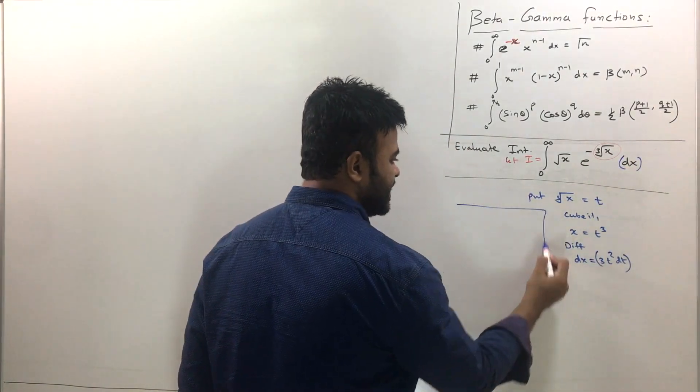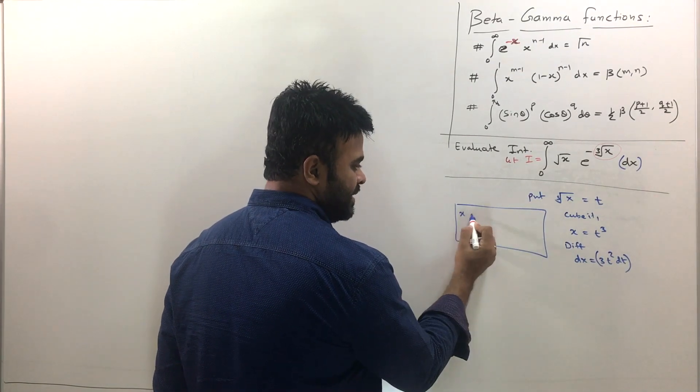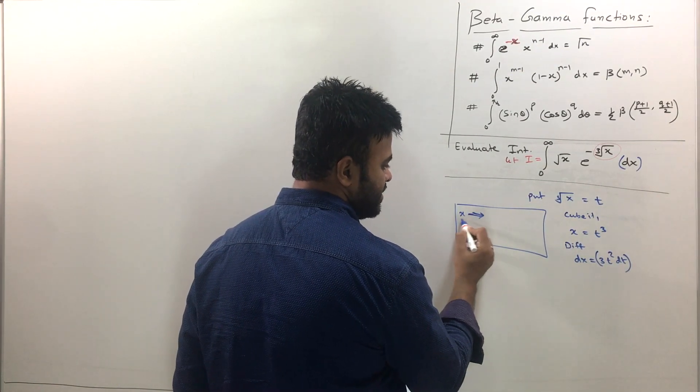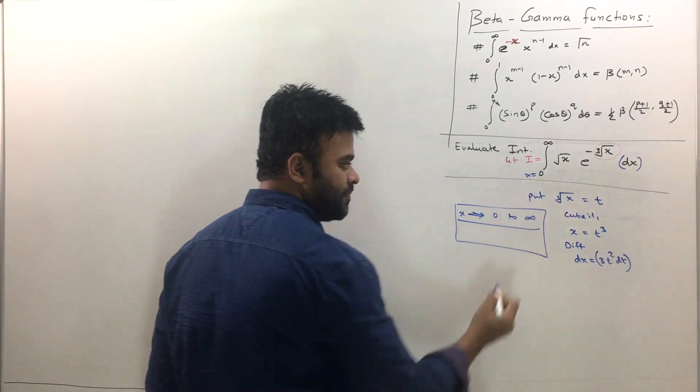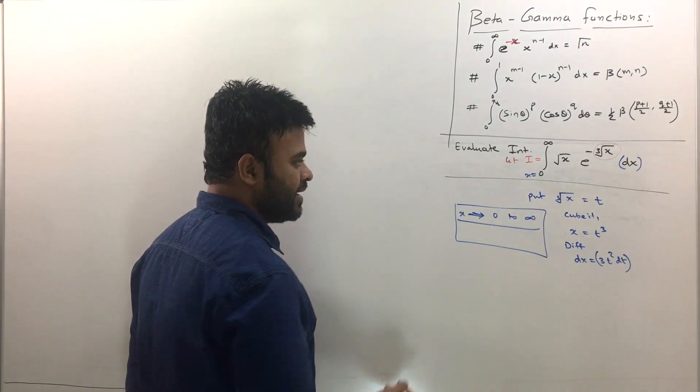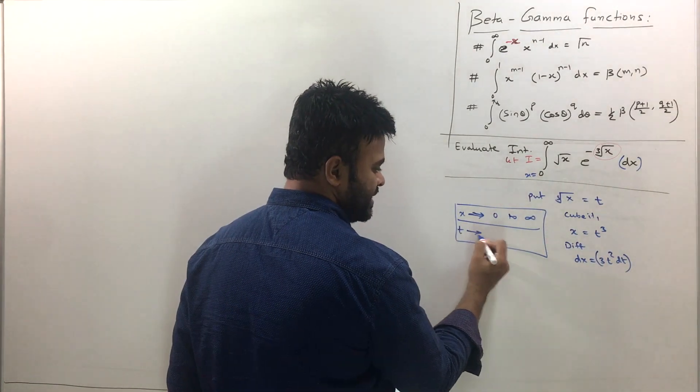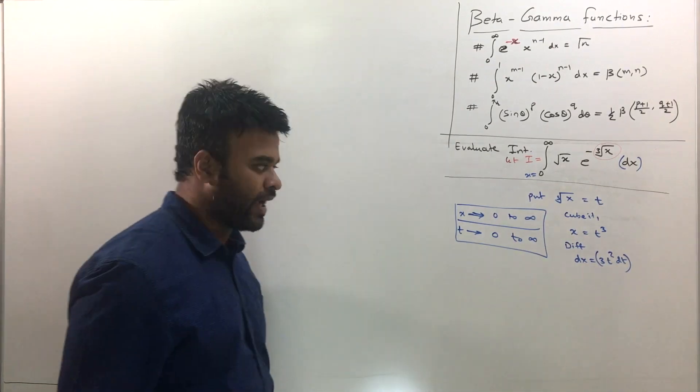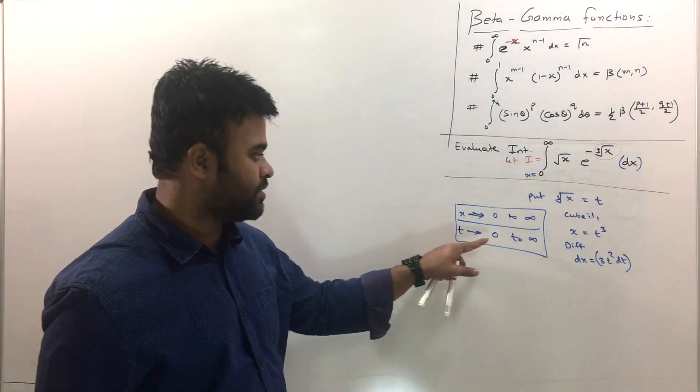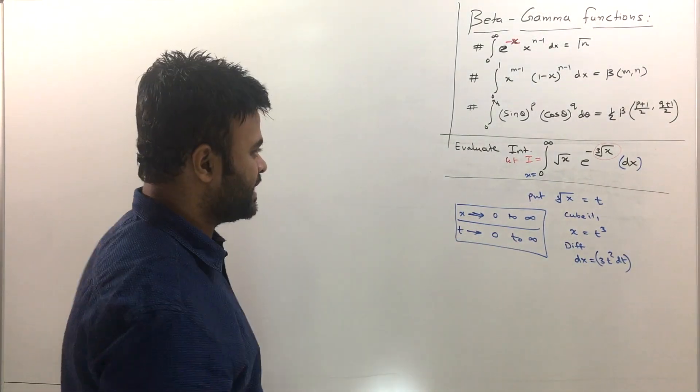And also I have to change limits. The original limits of x, the original limits of x are from 0 to infinity. So they will pretty much remain same. t will be 0 to infinity anyway. Just put values over here or here. So limit of t are also 0 to infinity. I got all the replacements.